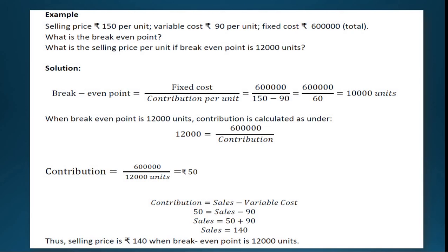Rearranging the equation: Contribution = 6 lakhs divided by 12,000 = Rs. 50. Now we know the contribution is Rs. 50 and the variable cost is Rs. 90, so we can calculate the selling price. Using Contribution = Sales minus Variable Cost: 50 = Sales minus 90. Moving 90 to the other side: Sales = 50 + 90 = Rs. 140. Thus, the selling price is Rs. 140 when the break-even point is 12,000 units.